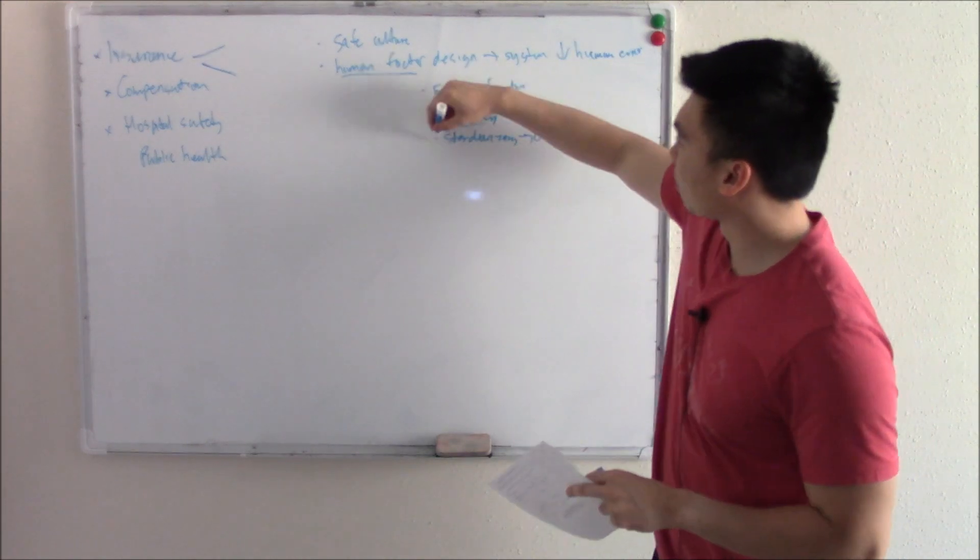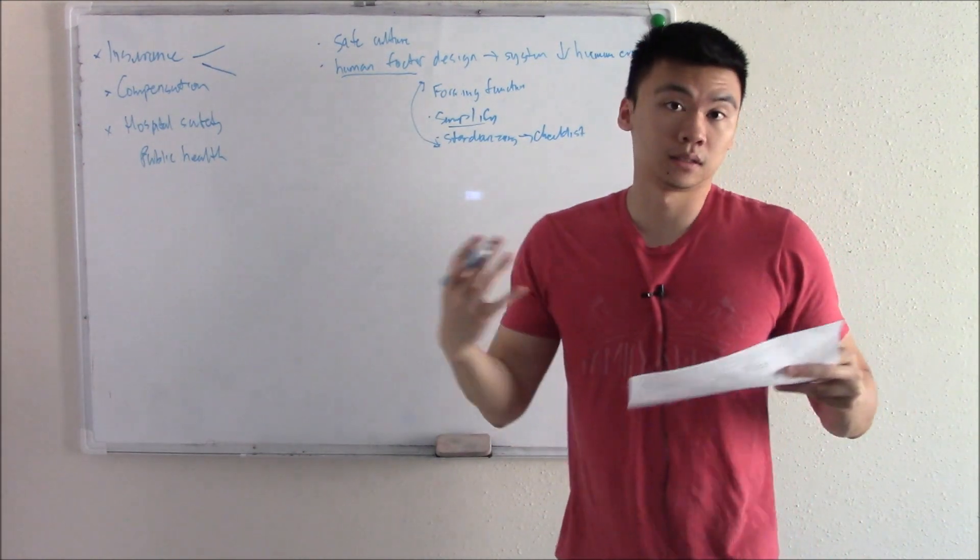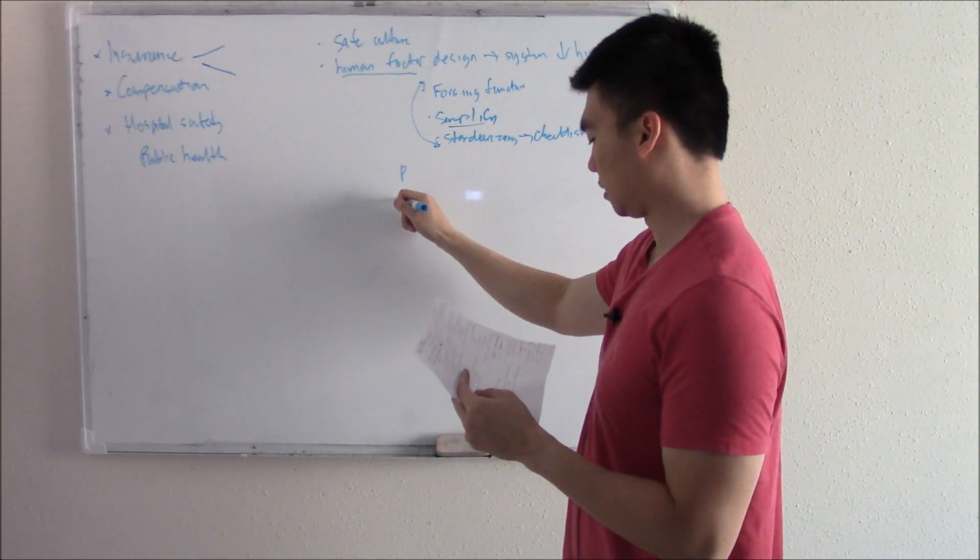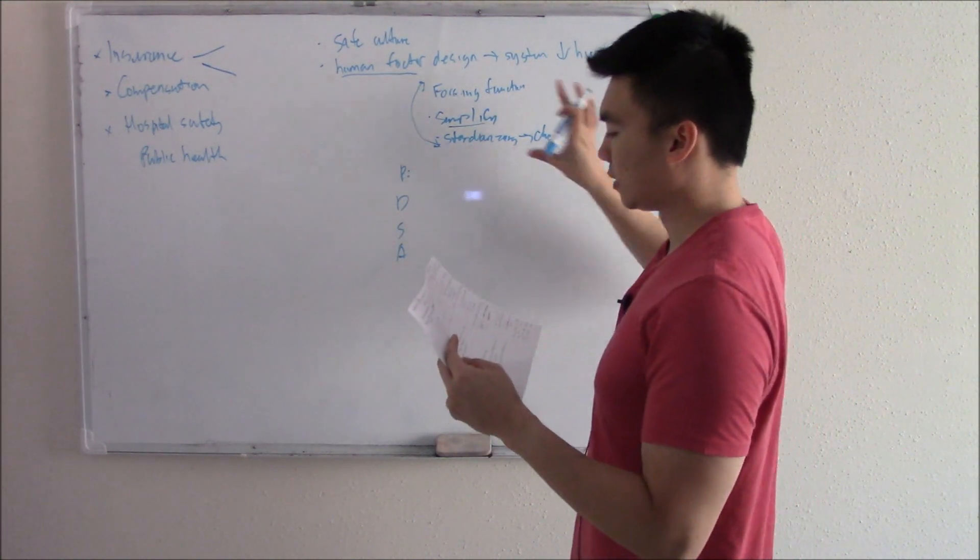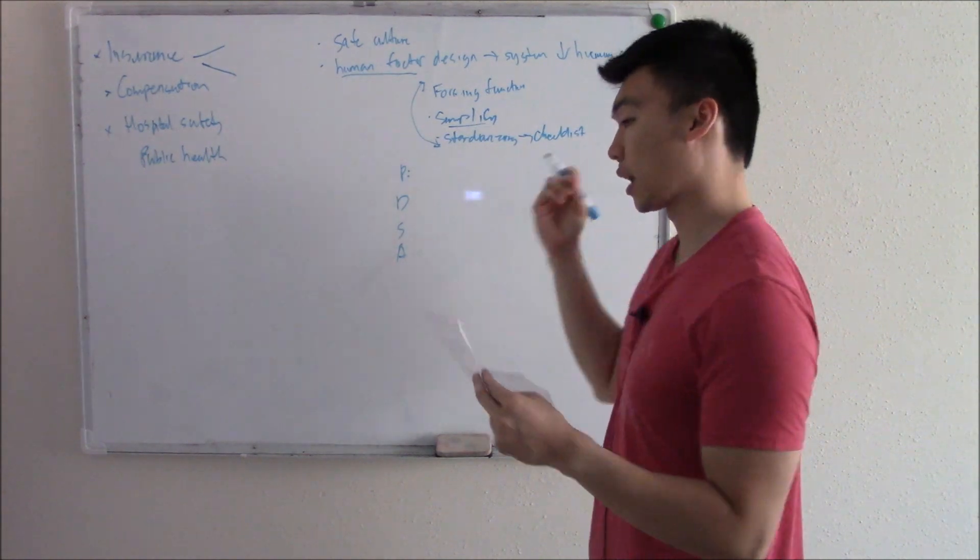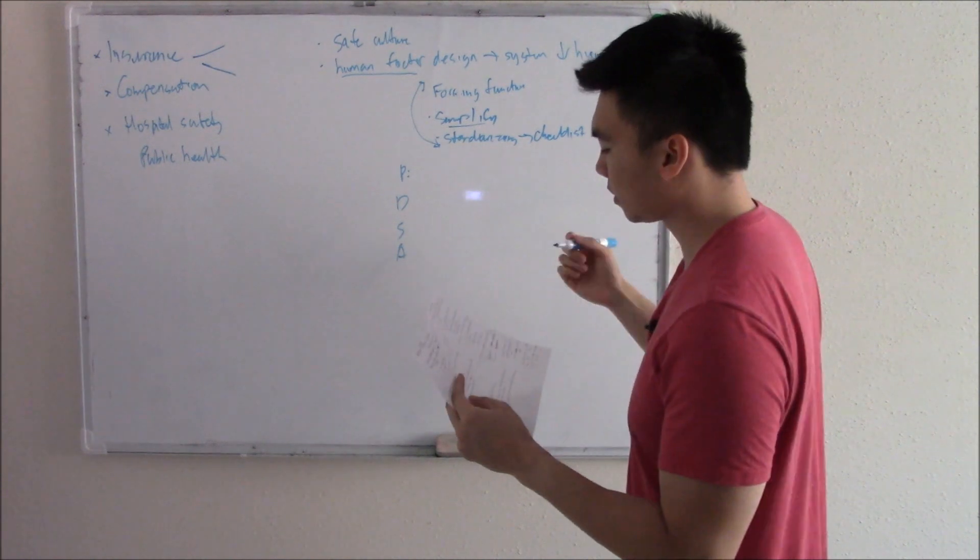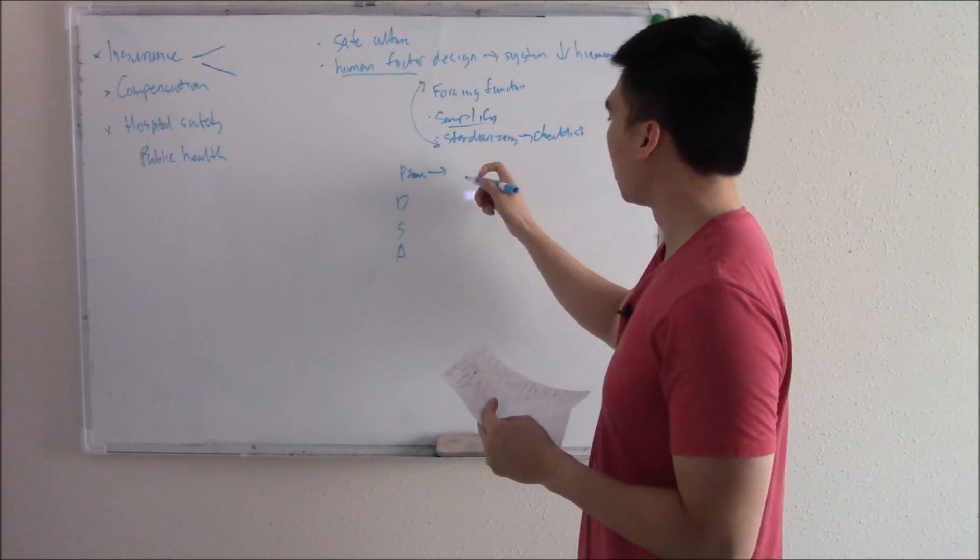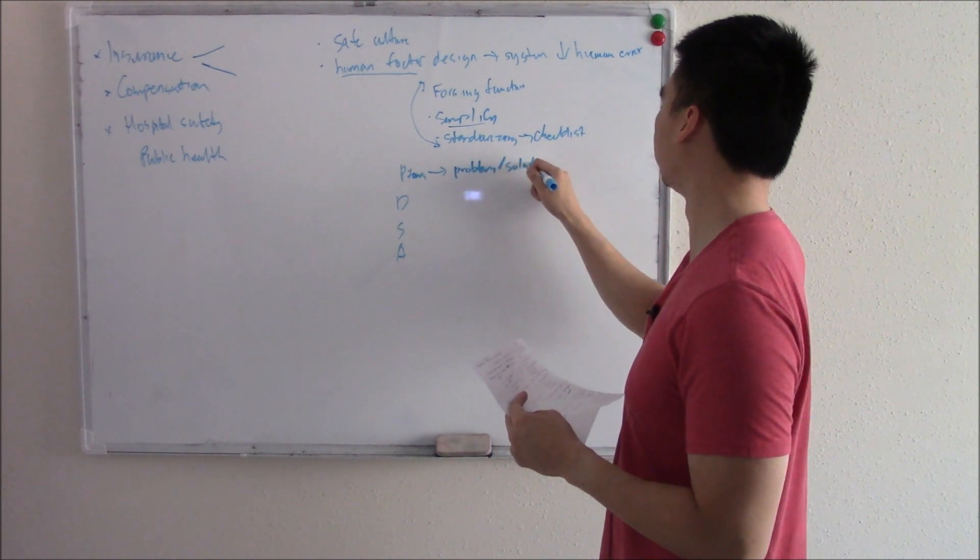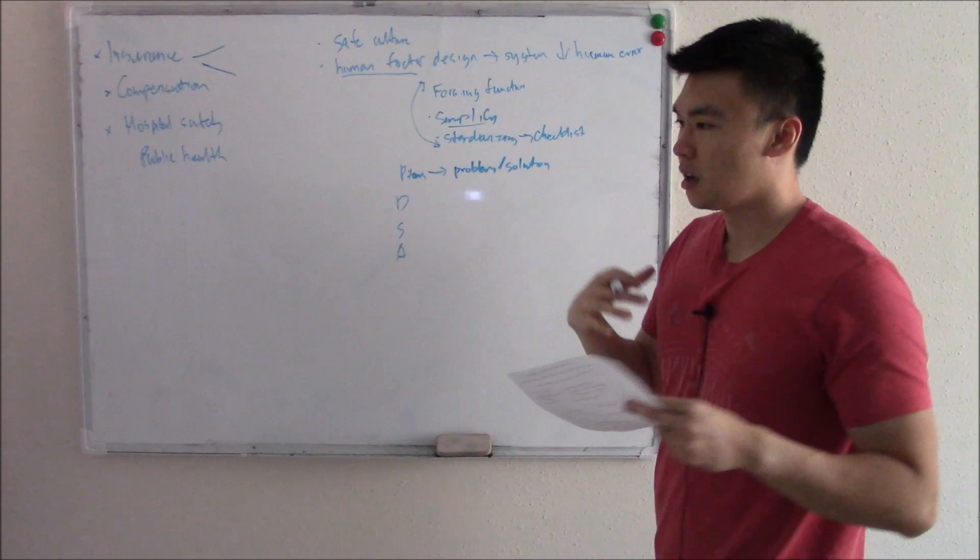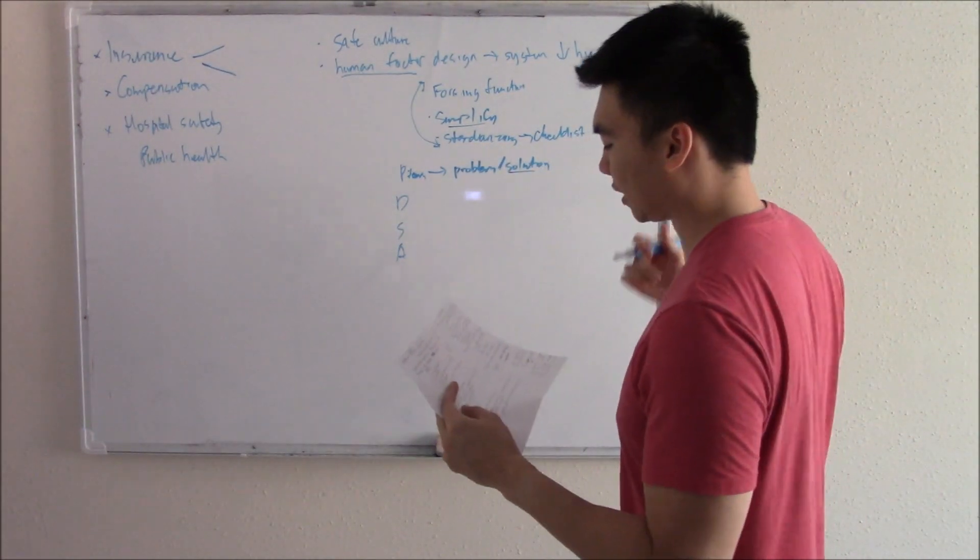Now, how do we come up with these things? How do we decide that maybe electronic records are better than normal records? We did something called a PDSA cycle. This is a cycle. This is kind of the steps we did to kind of decide, okay, this is a better thing to implement in our previous system. The first one, P stands for plan, where you identify a problem and you identify a possible solution. The problem with paper charts, hard to read, takes a bunch of space, hard to recover. Solution, make electronic charts.